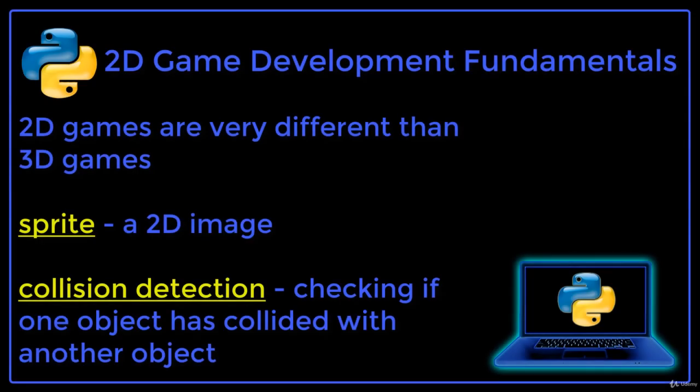In this lecture we will learn about the fundamental concepts of 2D game development. 2D games are very different than 3D games. In a 2D game, we start out with a bunch of single 2D images called sprites.